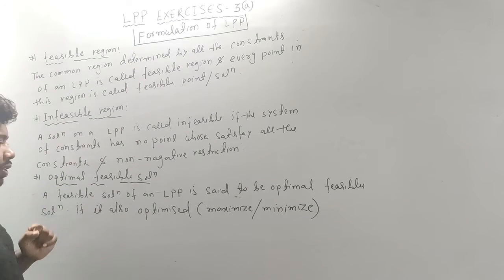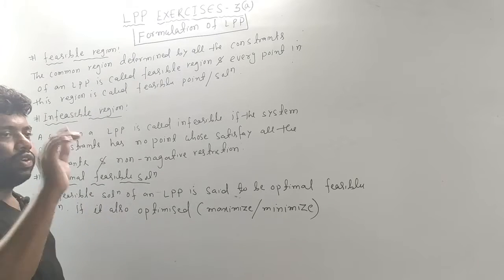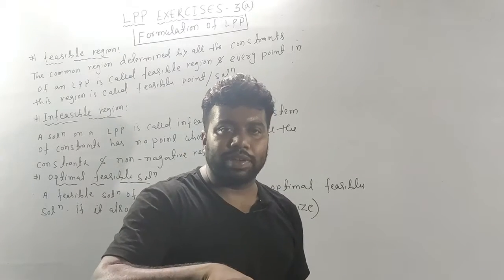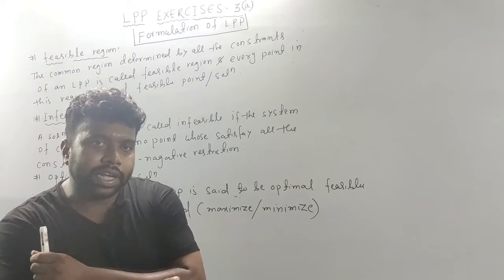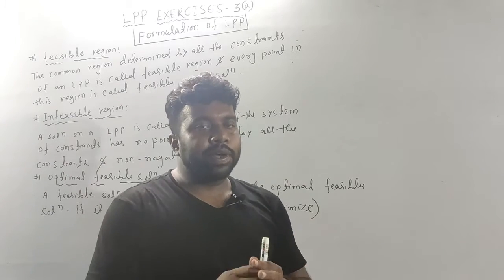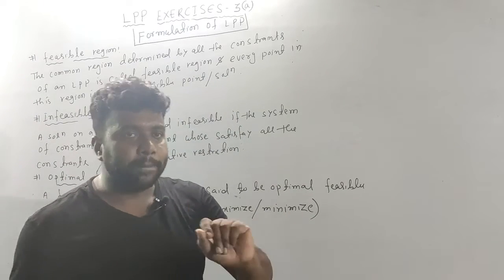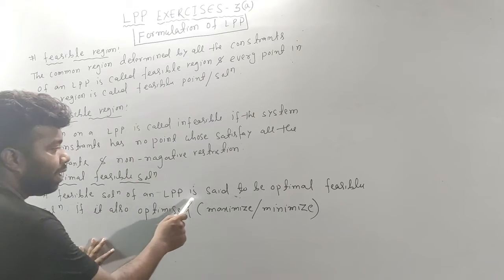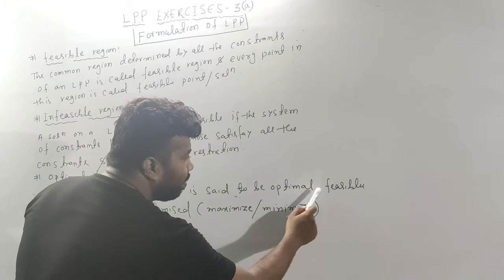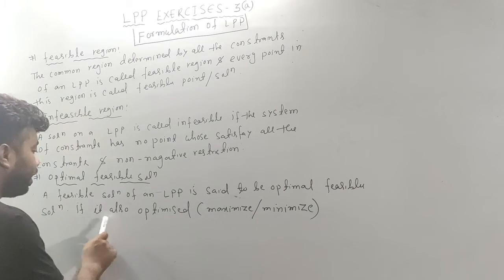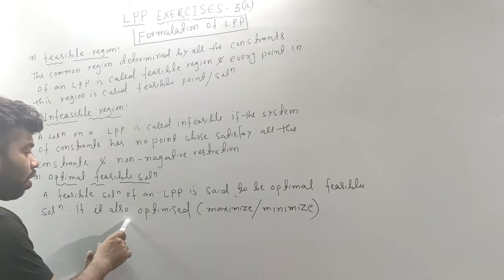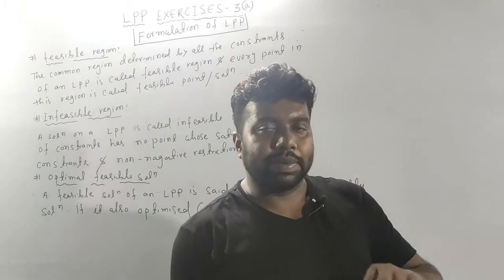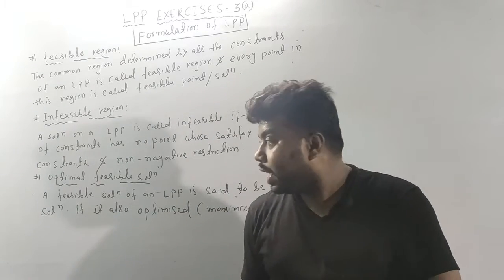Next is the optimal solution. Optimal means either maximize or minimize. The feasible solution of an LPP is called the optimal solution if it also optimizes — that is, maximizes or minimizes — the objective function.